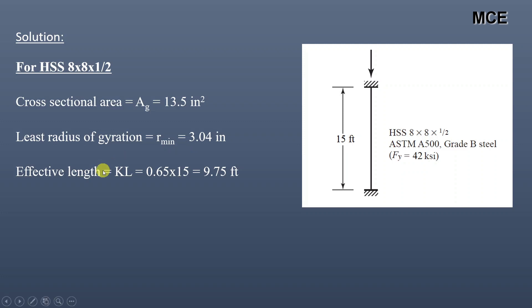Now the effective length of the column is given as K times L. Since the column is fixed at both ends, the value of K will be 0.65 and the total length is given as 15 feet, so the effective length would be 9.75 feet.